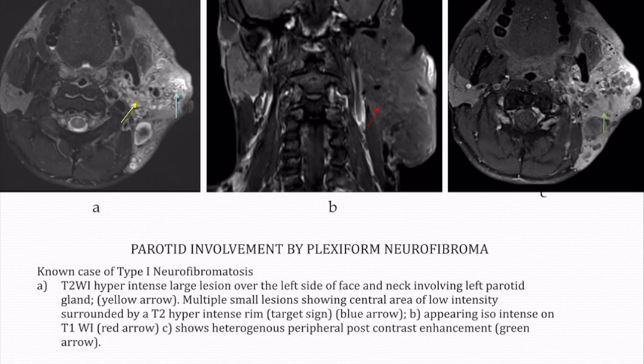A known case of type 1 neurofibromatosis showed a T2 hypo-intense large lesion over the left side of the face and neck involving the left parotid gland. Multiple small lesions showing a central area of low intensity surrounded by a T2 hypo-intense rim — the target sign — were seen. The lesion appeared iso-intense on T1-weighted images and showed heterogeneous peripheral post-contrast enhancement. The diagnosis given was plexiform neurofibroma.